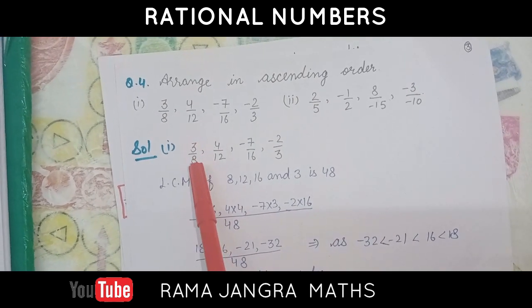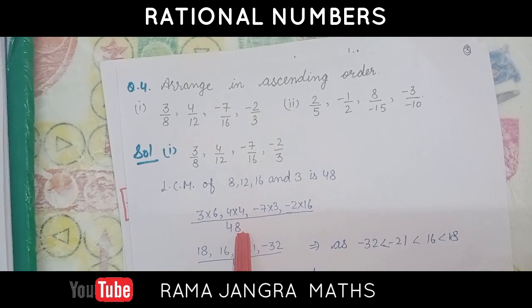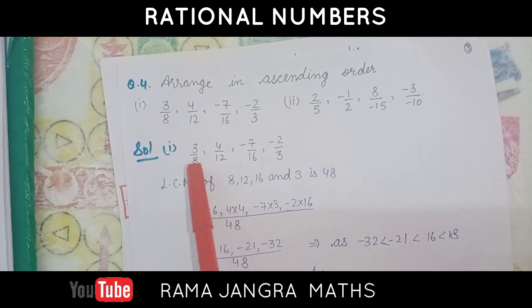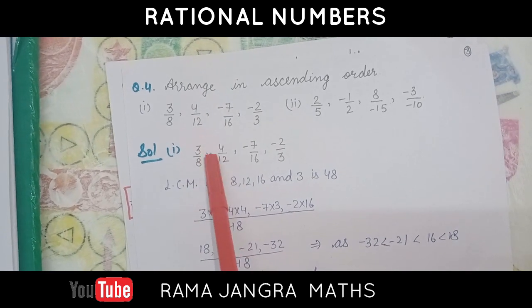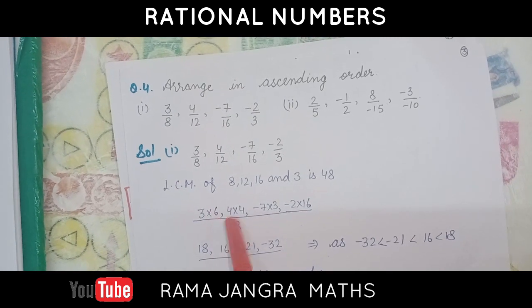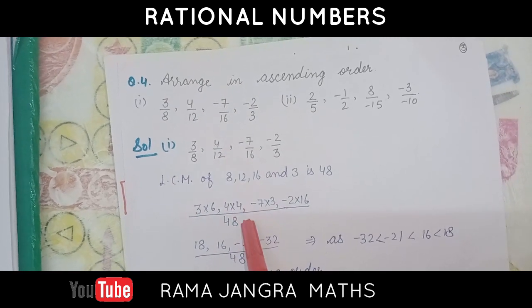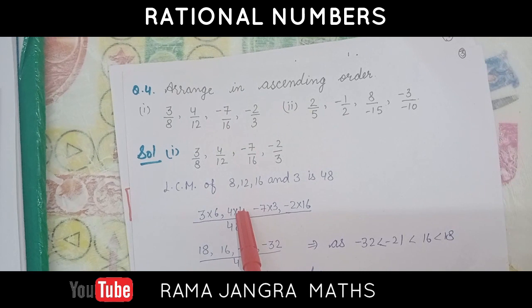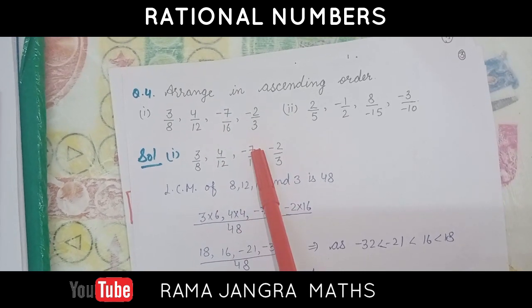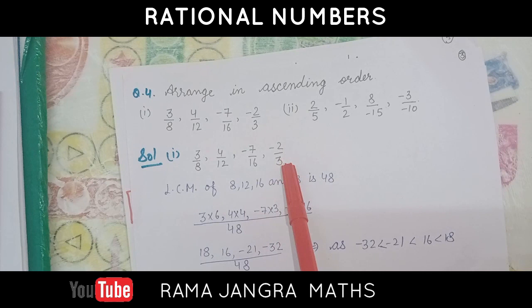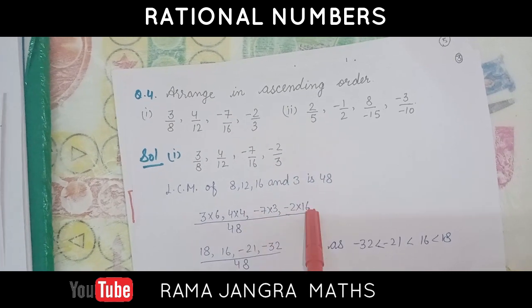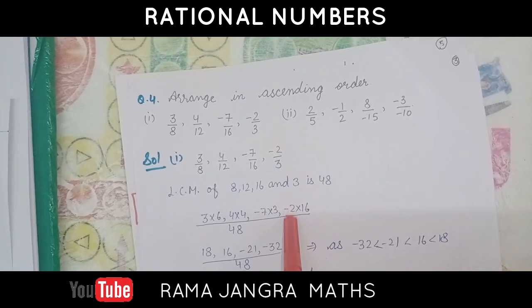Which is 3 by 8, we have to divide the denominator by this LCM. That is, 6 and multiply with the numerator. Same in this way also, divide by 4 and multiply with 4. Here also 3, so we have to multiply it by minus 7. Here, divide by 16 and multiply by minus 2.